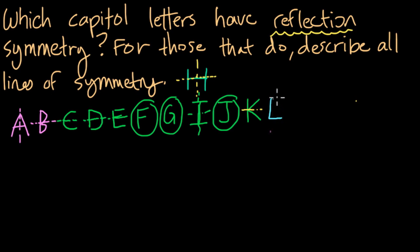L has no lines of symmetry. M has a line of symmetry, right? A vertical line right here. We can fold it in half. How about the letter N? Well, N does not have any lines of symmetry, right? You might imagine that we can fold it vertically, but there is no exact match there.